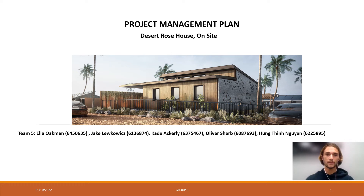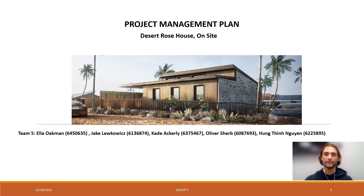Good afternoon everyone. Today we will be presenting you with our Desert Rose House Project Management Plan. The National Disability Insurance Scheme have selected our team to construct a Wollongong-based housing development featuring 70 new dwellings based on UOW's award-winning Desert Rose House concept. Our aim is to provide a solution to the undersupply of safe and affordable housing for the disabled community in our area.